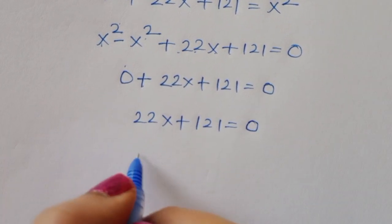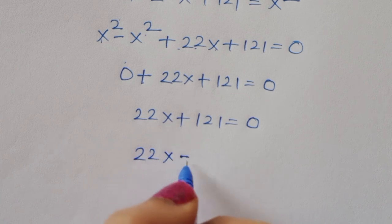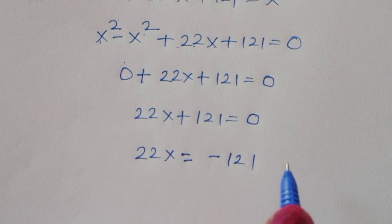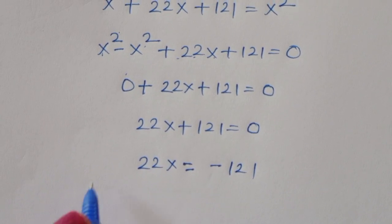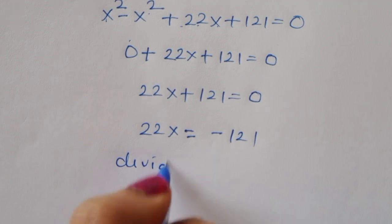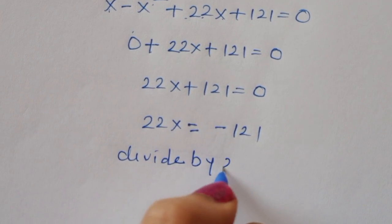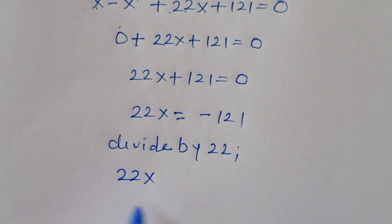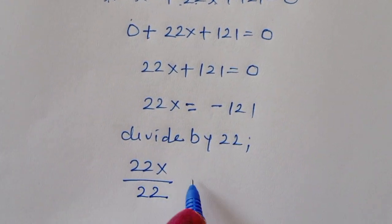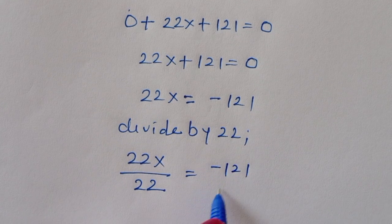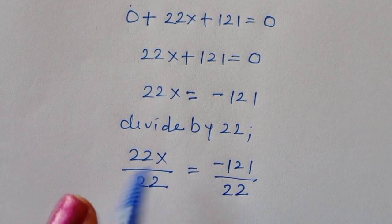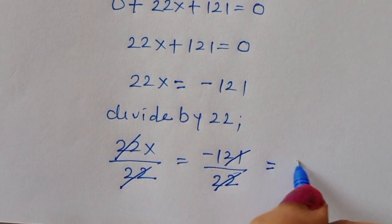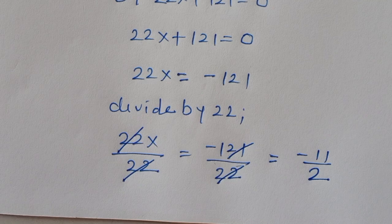From 22x + 121 = 0, we get 22x = -121. Dividing both sides by 22: x = -121/22, which simplifies to x = -11/2.